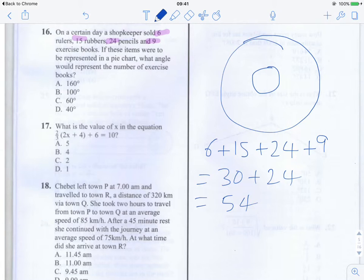Of which 6 are rulers. Let's represent rulers by R. So we have 6 over 54. Let's represent rulers by RL, since we have two starting with R, rulers and rubbers. Rubbers can be RB. And of those, there are 15. So 15 out of 54.